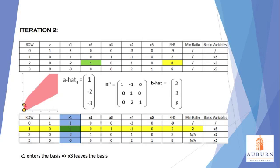To check for optimality, we look at row 0 to see if there are any positive coefficients for our non-basic variables. We can see that X1 has a positive 8 value, which proves the solution is not optimal and that X1 should enter the basis. To choose a leaving variable, we perform the min ratio test again by dividing the right-hand side, or B-hat, by the X1 entering variable column, or A-hat, which is similar to the second iteration from the matrix form.